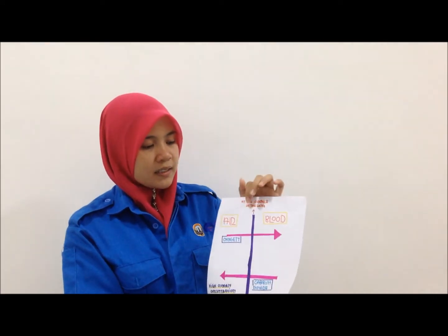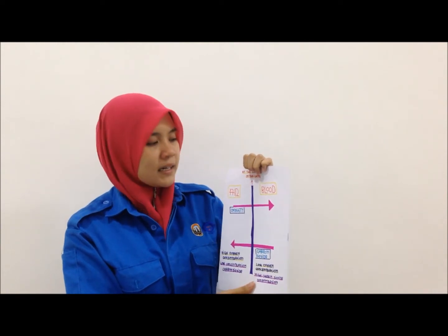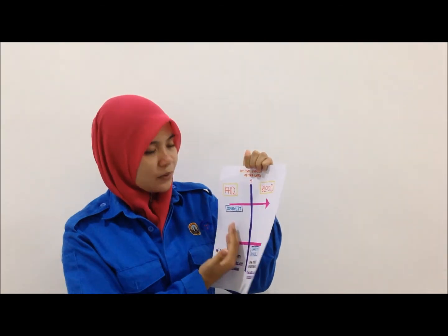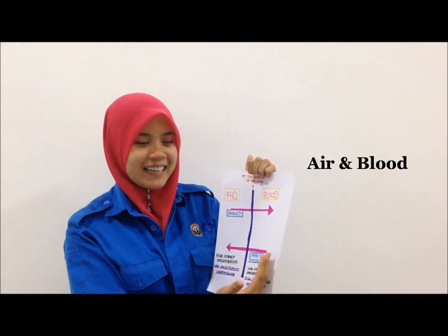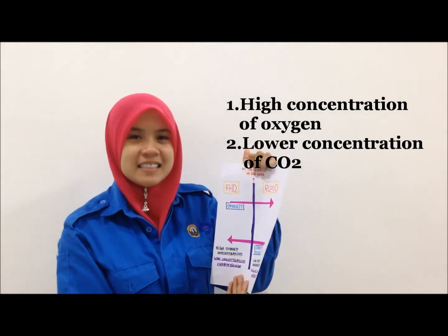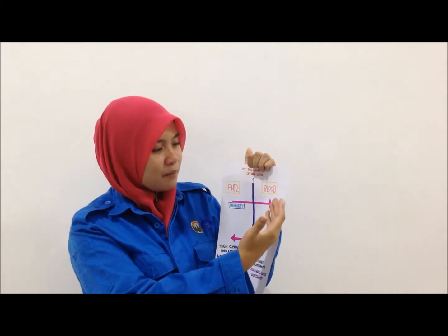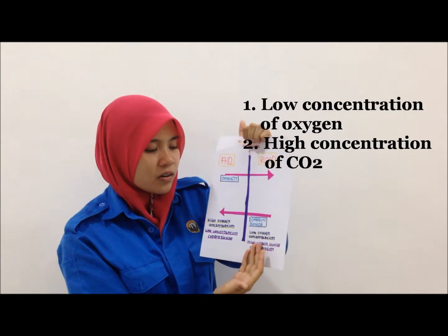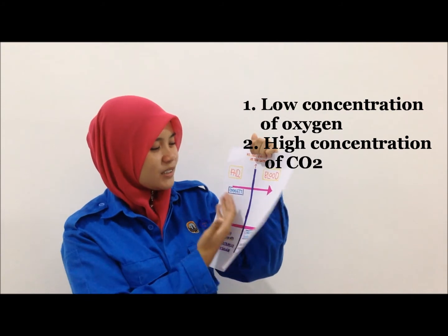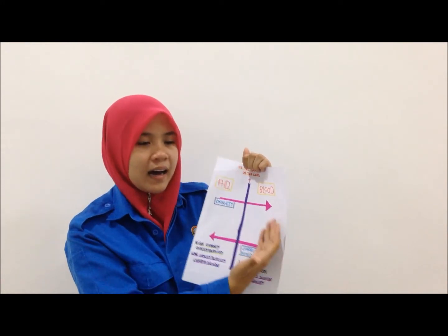Here is an example of diffusion related to our lungs. The surface of our lungs consists of two parts: air and blood. Air consists of high concentration of oxygen and lower concentration of carbon dioxide, while blood consists of low concentration of oxygen and high concentration of carbon dioxide. Oxygen will diffuse from high to lower concentration, and carbon dioxide will diffuse from high to lower concentration.